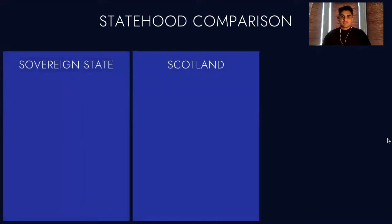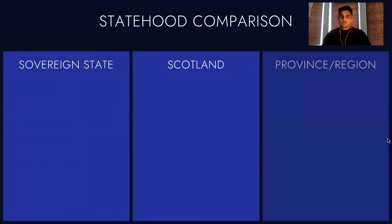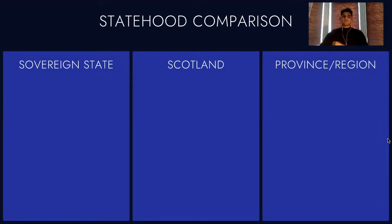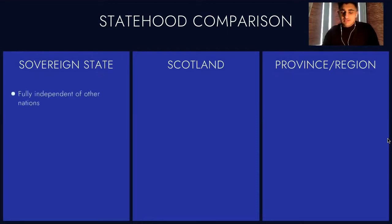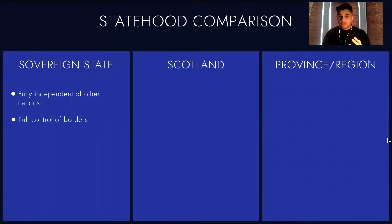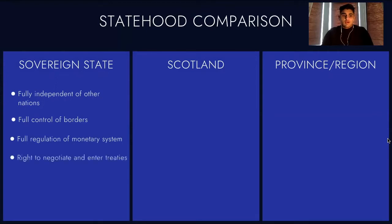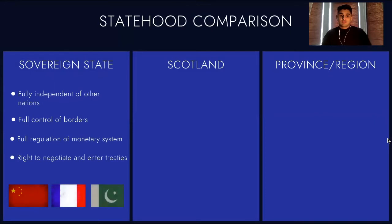We have a sovereign state — China, France, whatever you pick. These are some qualities of a sovereign state: they're fully independent of other nations, they have full control of their borders — who and what comes in and out — full regulation of their monetary and economic system, and the right to negotiate and enter treaties and agreements on a diplomatic scale. Examples would be China, France, and Pakistan.